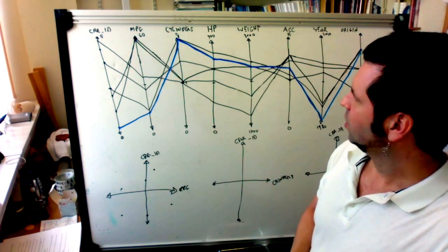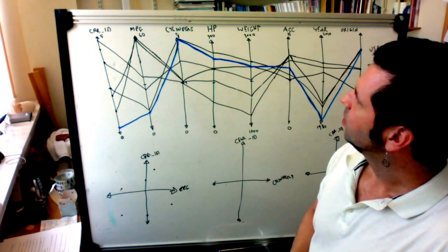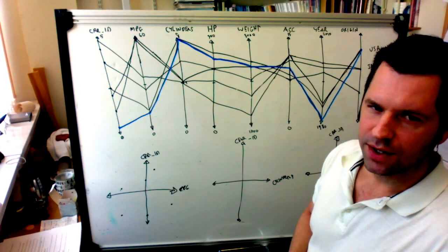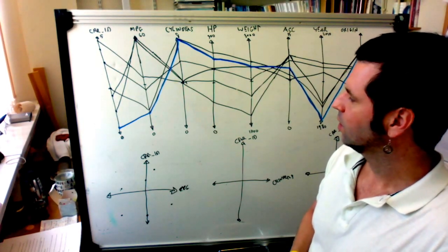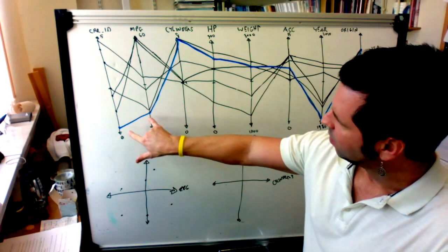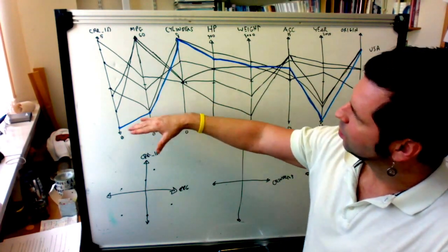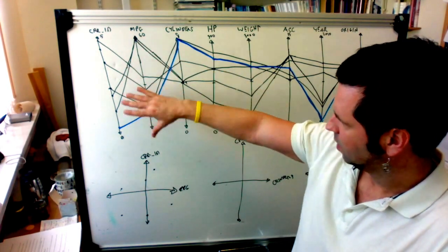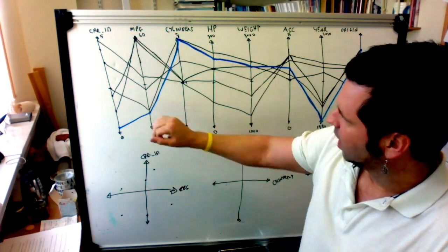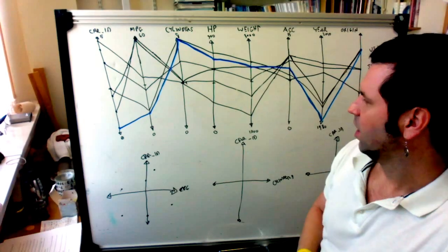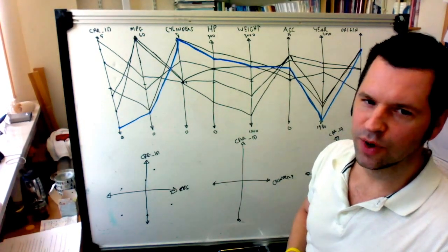The advantages of the parallel coordinates is it's specifically for high dimensional data. One disadvantage of the parallel coordinates is that it's susceptible to over-plotting. So since every data sample is represented by a polyline, as soon as we get up to a few thousand polylines, the whole thing starts to get over-plotted. And there are a number of ways to handle that.